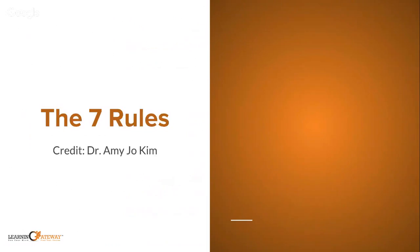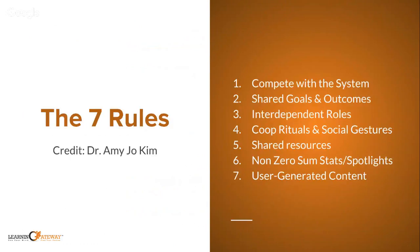Her seven rules for creating a co-op game design are: one, compete with the system; two, shared goals and outcomes; three, interdependent roles; four, rituals and social gestures; five, shared resources; six, non-zero-sum types of stats and spotlights; and seven, user-generated content. We're going to go through each of those rules one by one in the context of education.